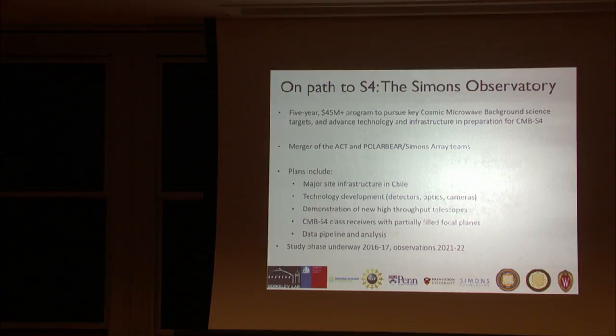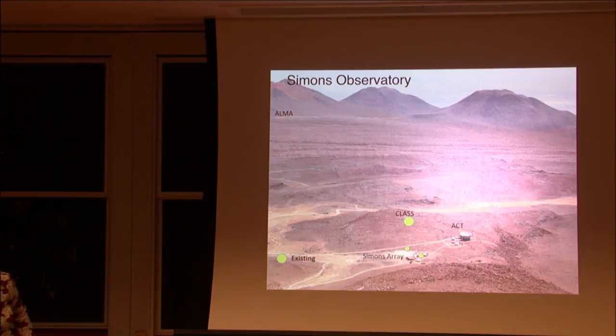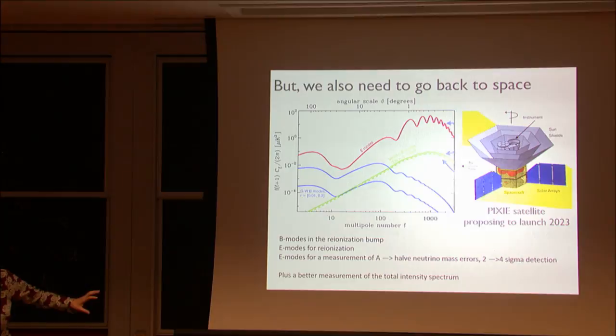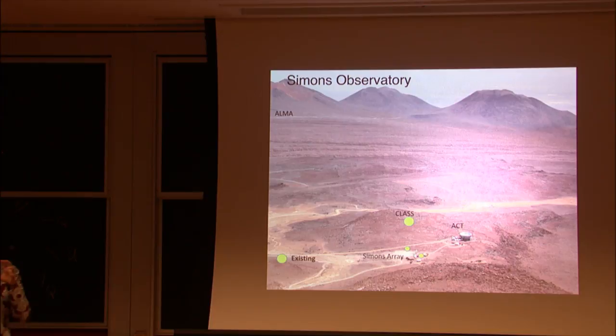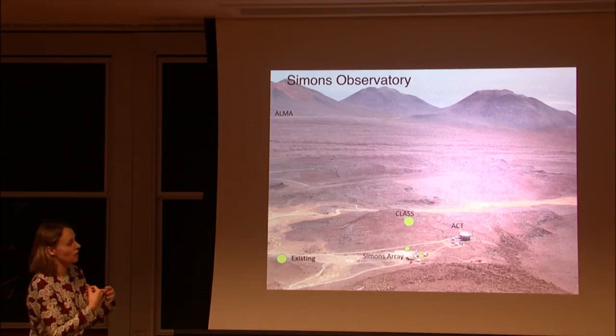The Simons Observatory will involve site infrastructure in Chile, technology development, and starting the Stage 4 process together as a large project. We're in a study phase now, imagining for example putting new telescopes alongside existing ones on the same site, leading up to the full Stage 4 experiment with multiple new telescopes of possibly different sizes.